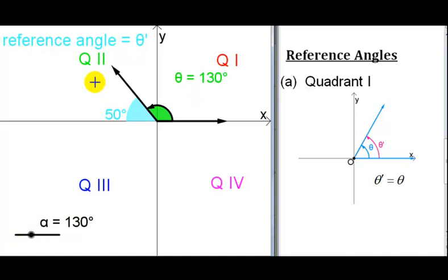Now I'm in quadrant 2. Here is my angle: initial side, terminal side, my angle is 130 degrees. This is the reference angle. The reference angle is the acute angle the terminal side makes with the x-axis.